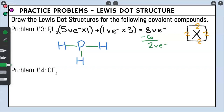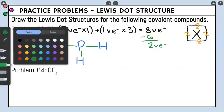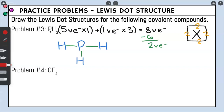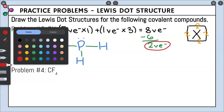Remember, hydrogen does not want any dots. So the only place we can put dots is on phosphorus. There's only one side of the box available — the top — so we place two dots there: one, two. We only had two valence electrons left over, that's how many dots we should have, and that is your final answer for problem number three.